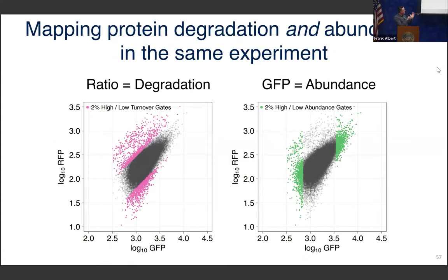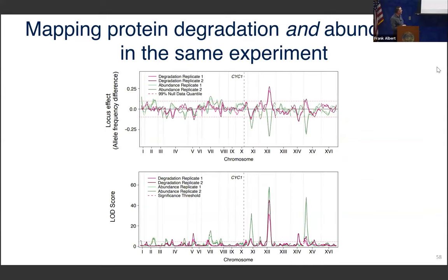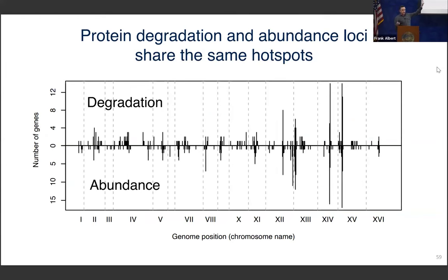In a bit like Christian's approach, we were also interested in what degradation does to the genetics of protein abundance for these same proteins. Same trick — same cell, same population as before. We can either gate on the ratio of the two colors to look at degradation, or just look at GFP to get a measure of protein abundance. Malon also did that for all 49 proteins, in two biological replicates at the same time as the degradation measurements. Laying the abundance traces on top, we see really nice correspondence between degradation hotspots and abundance hotspots. It's not perfect — there are some degradation-specific or abundance-specific loci — but overall it really looks like the degradation loci have a lot to do with the abundance loci.